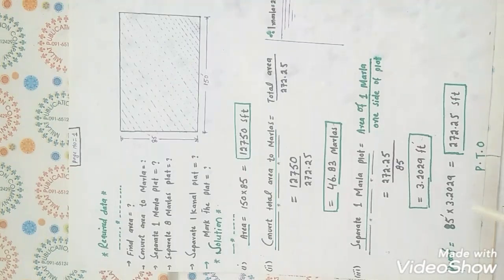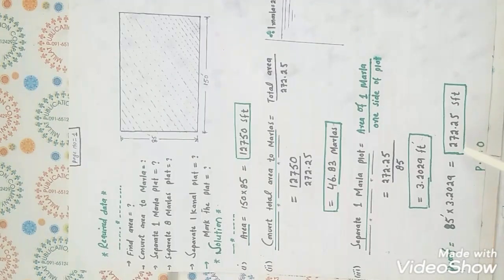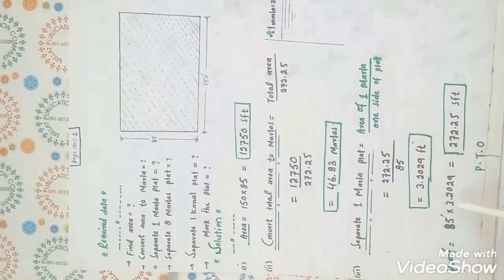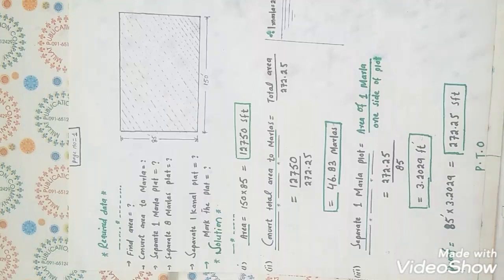To verify: 85 multiplied by 3.2029 equals 272.25, which confirms one Marla equals 272.25 square feet. If the result matches, the calculation is correct; if not, there is a problem.